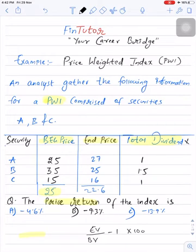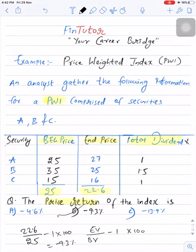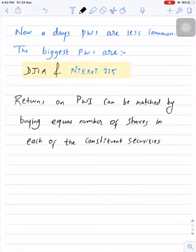In the same way, we compute the arithmetic average of ending prices, which gives us 22.6. Applying the formula: 22.6 divided by 25, minus 1, multiplied by 100 gives an answer of negative 9.3%. So answer B is the correct choice. In the real world, the two biggest price-weighted indices are the Dow Jones Industrial Average and the Japanese Nikkei 225 index.